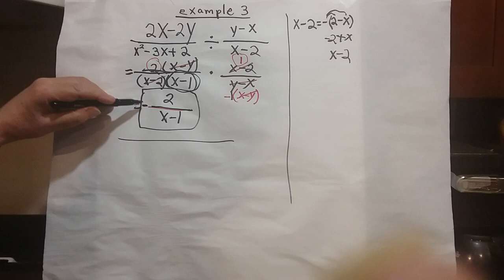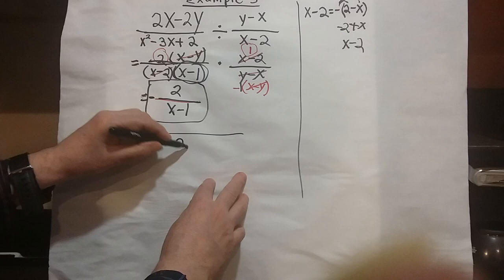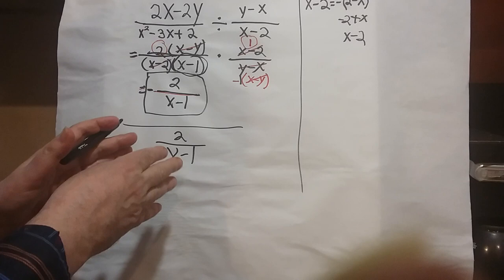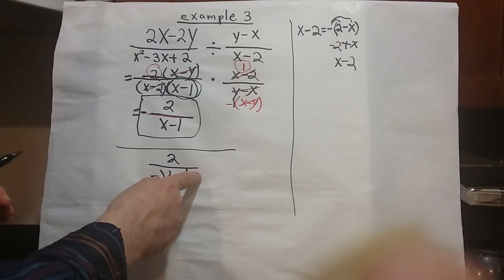You could also put the negative on the bottom, but you've got to be careful with that. If I just go like this, I actually have the wrong answer. And why? That's because you're taking a negative of a binomial, and you would have to put the binomial in parentheses.